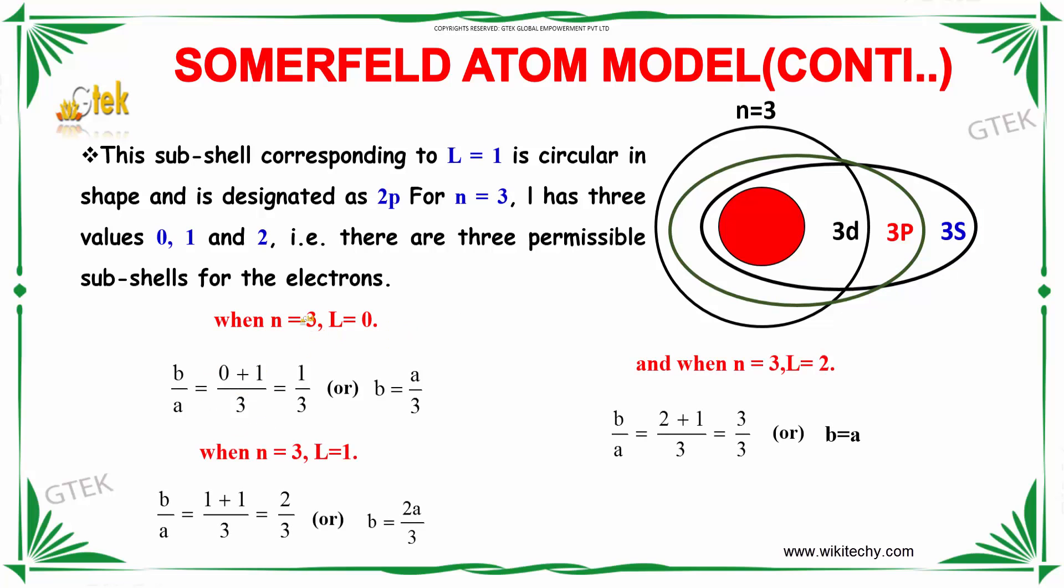Substituting the values: for n=3 and L=0, we get 1/3, so b=a/3. For n=3 and L=1, we get 2/3, so b=2a/3. For n=3 and L=2, we get the circle, so b=a. Therefore, b=a/3 is your s shell, b=2a/3 is your green color p shell, and b=a is your black color 3d shell.